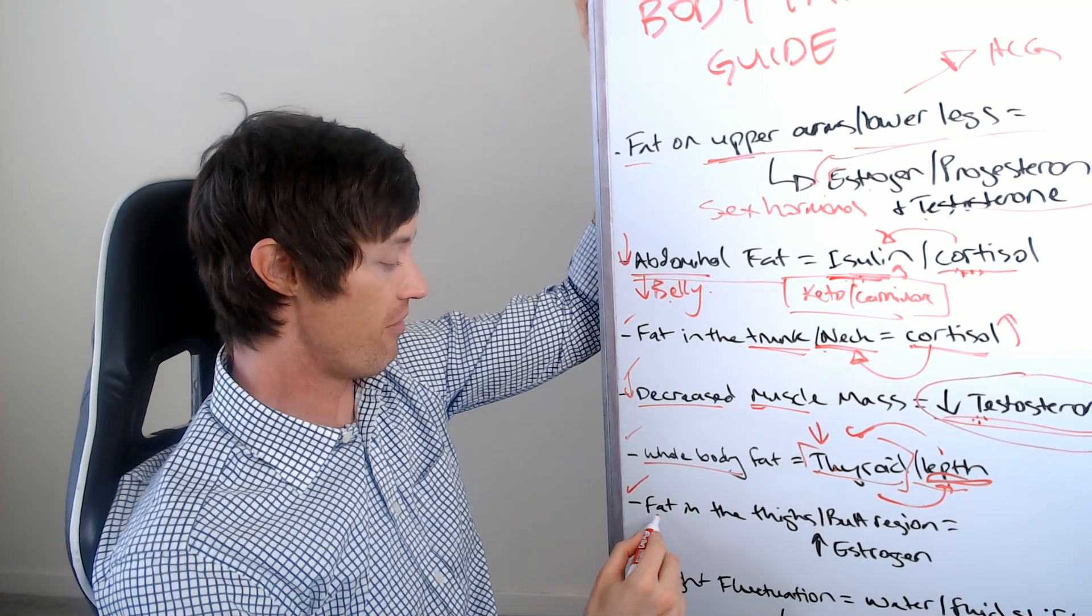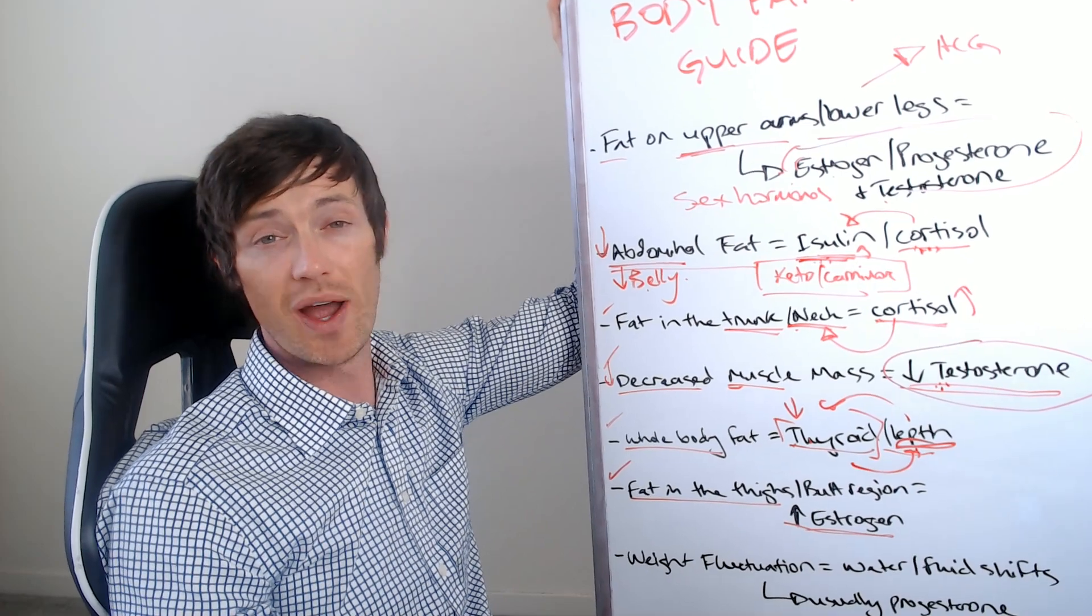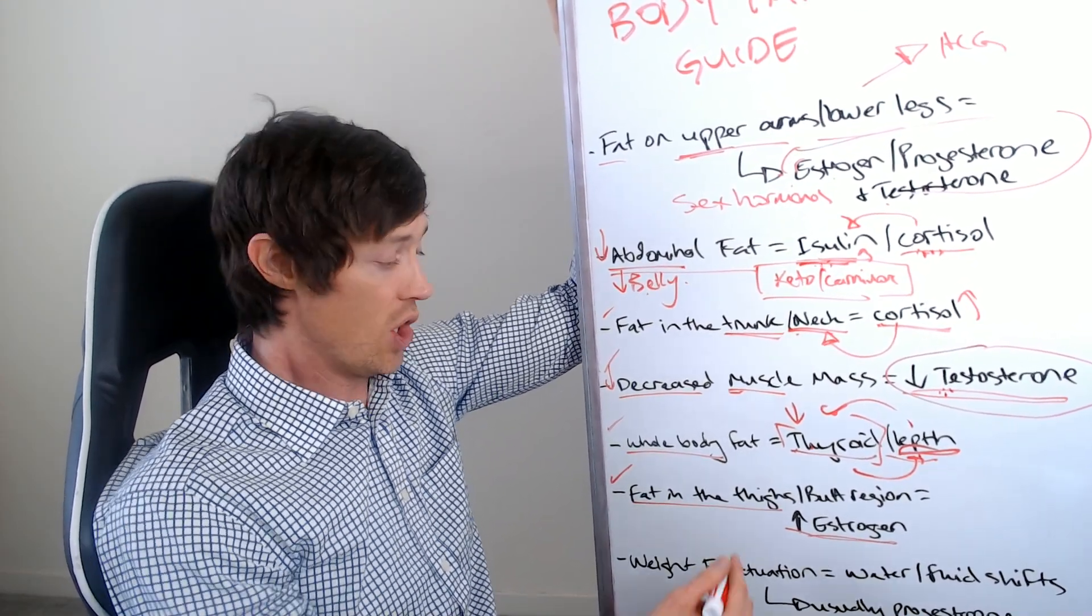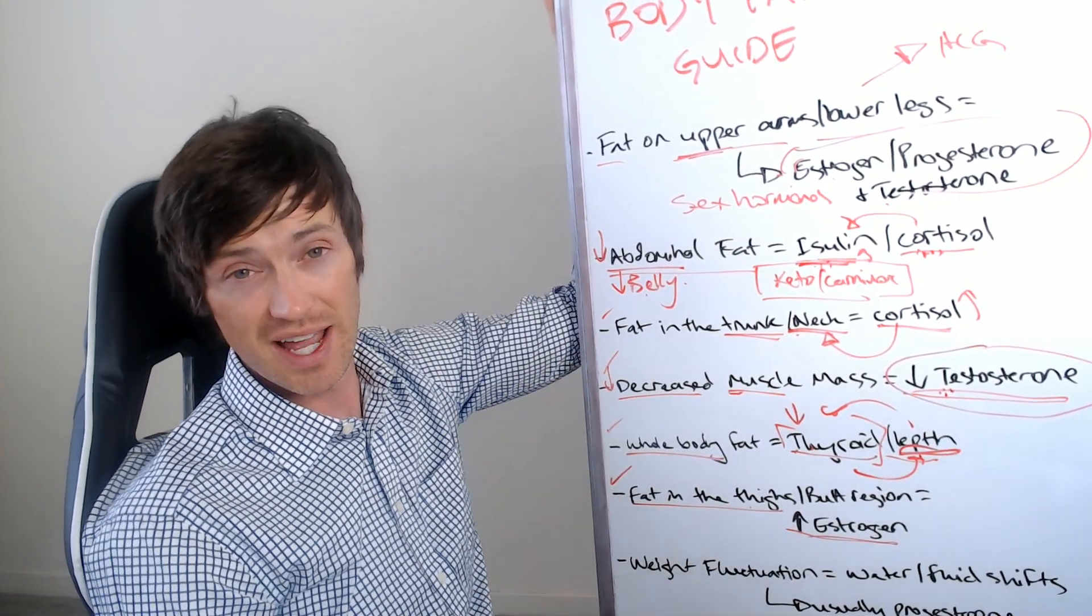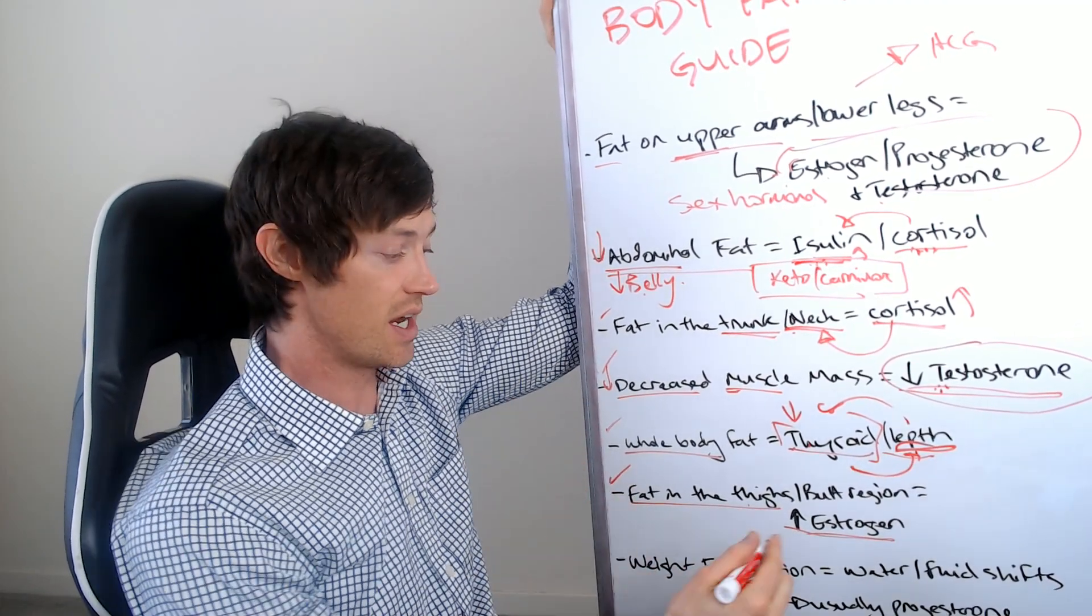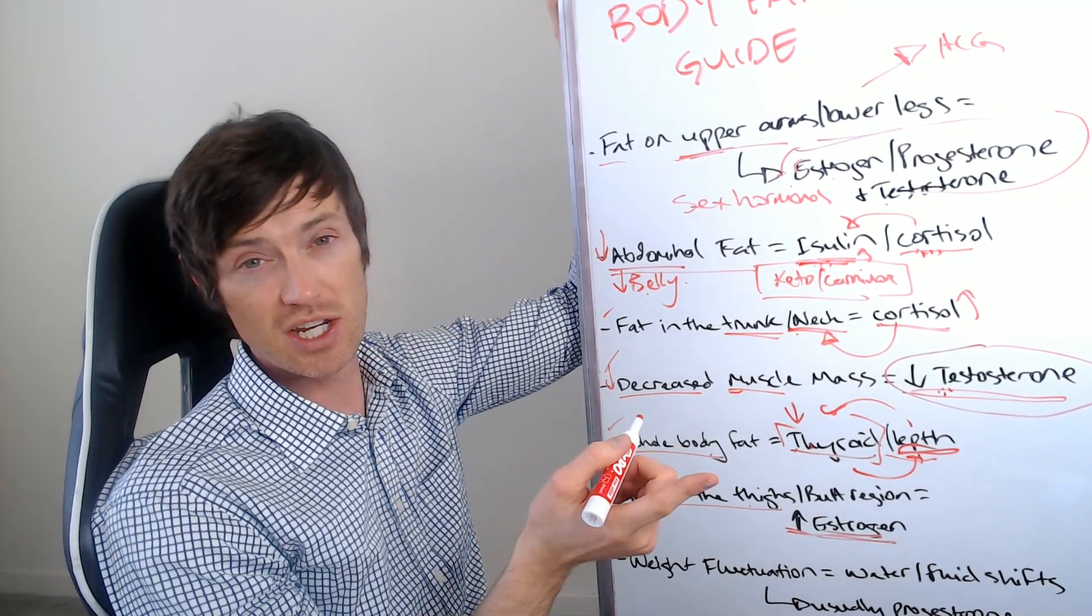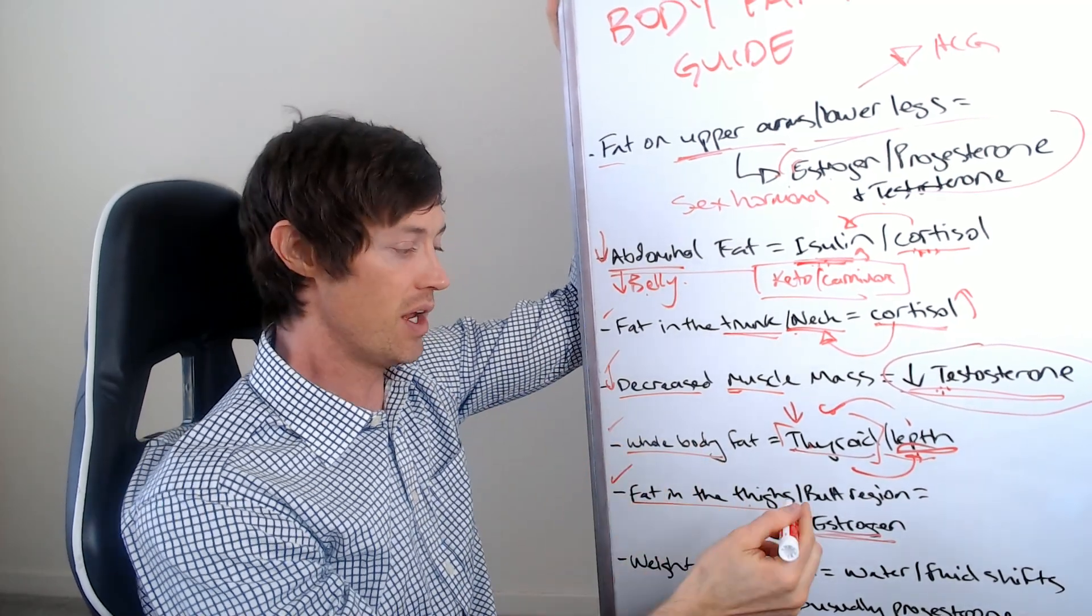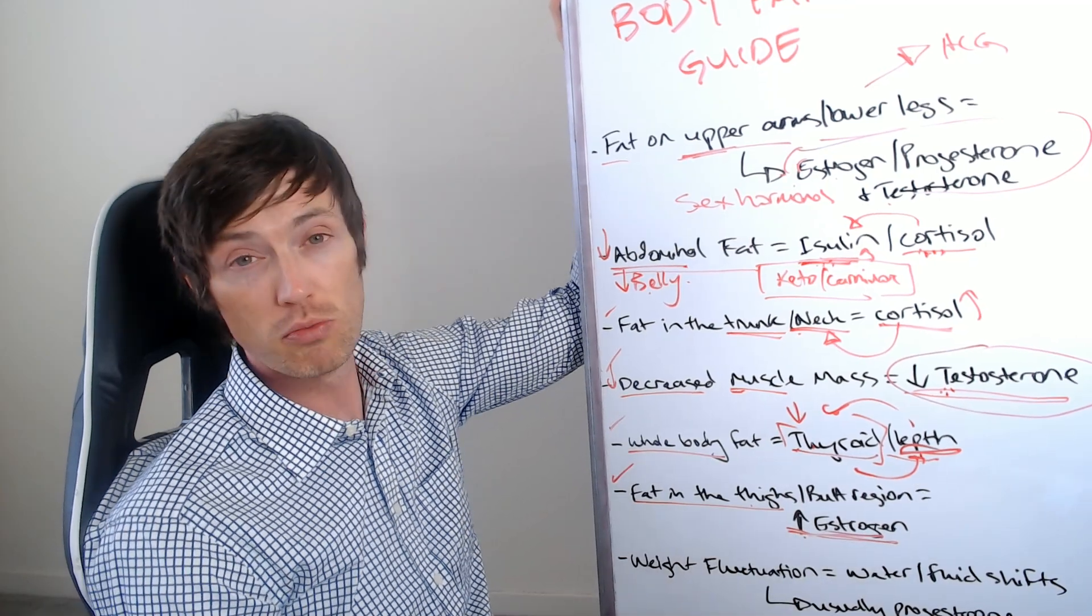Next would be fat on the thighs and/or butt region. This is almost always due to an increase in estrogen. So anything that is causing estrogen dominance or excess estrogen in the body will cause weight gain specifically in those areas. I should include here the breast as well. So if you're having breast enlargement, if you're having enlargement of the thighs and butt area, all of those areas tend to be exclusively caused by an increase in estrogen.